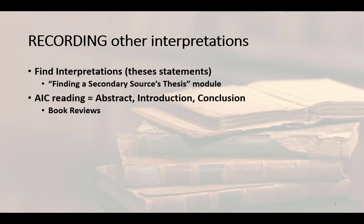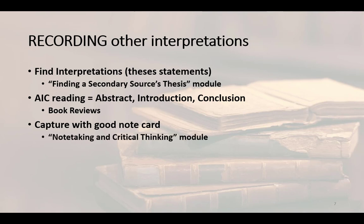Now let's speak about books. Books don't usually have abstracts, but you can read book reviews in academic journals in place of those abstracts. Then read the book's introduction — not the preface, unless it acts as an introduction — and then read the book's conclusion. Once you've figured out the author's interpretation, capture it on a note card on which you've put complete bibliographic information. I've used four-by-six inch note cards to capture the work's bibliographic information, its thesis statement, and an outline of the author's argument. When I want to take data or other notes from that work, I write up a note card as instructed in our module, Note Taking and Critical Thinking.